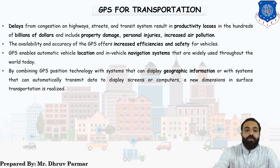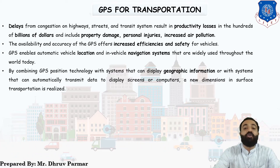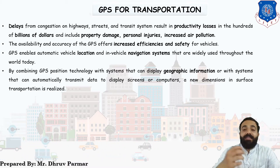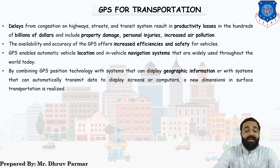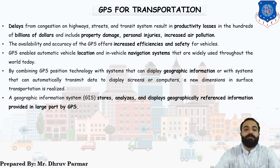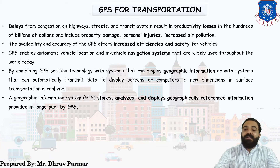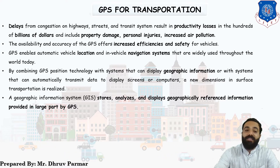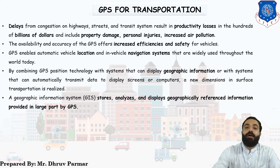By combining GPS position technology with systems that display geographic information, that data is transmitted to a display screen or computer. Due to this combination, new surface transportation solutions are realized. A Geographic Information System stores, analyzes, and displays geographically referenced information provided in large part by GPS.